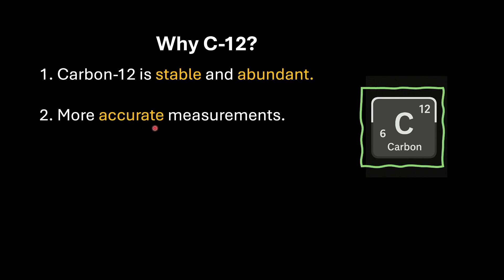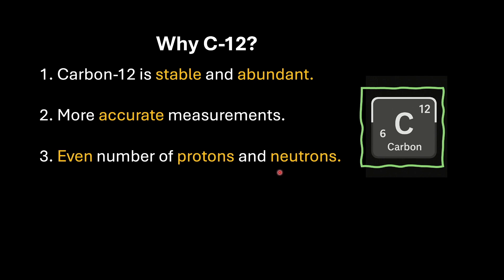Reason number two: using carbon-12 is more accurate in measurements. It avoids the errors that occurred with hydrogen, which has multiple isotopes and is very light, making it hard to weigh precisely. Reason number three: carbon-12 has an even number of protons and neutrons. The answer to why that helps lies in how these six protons and six neutrons are arranged in the nucleus — they pair up inside the nucleus.